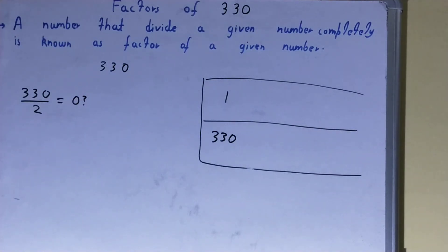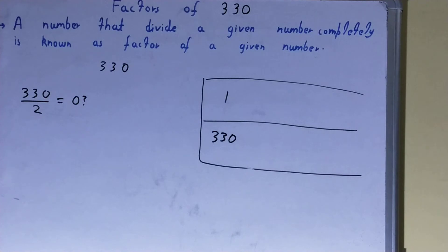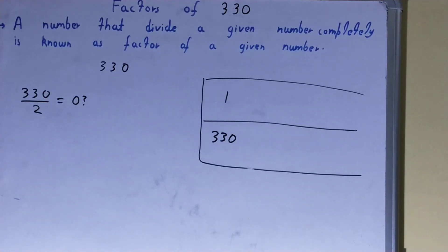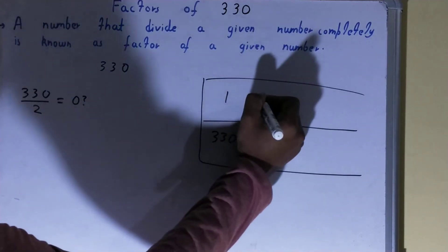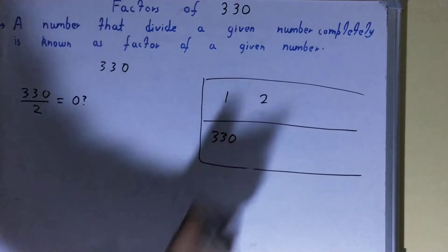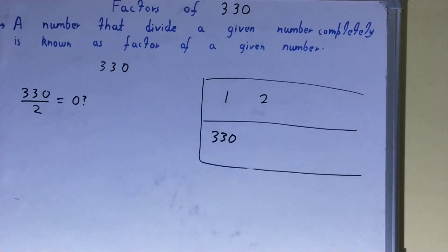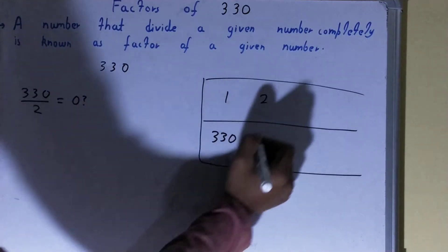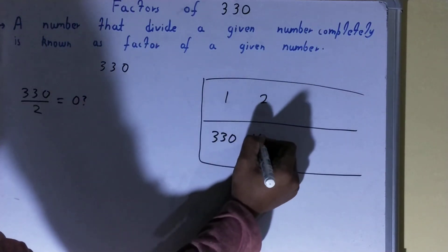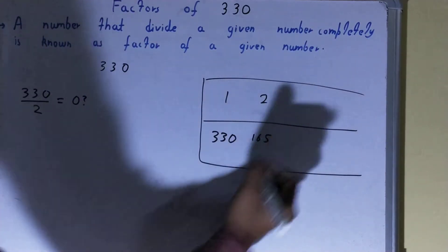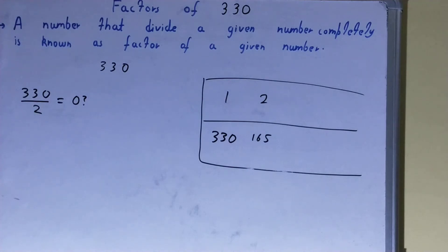Is the number 330 divisible by 2? The answer is again yes, because 330 is an even number and all even numbers are divisible by 2. So 2 is a factor. And 2 into what times? 2 into 165 times. So 165 will also be a factor.